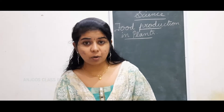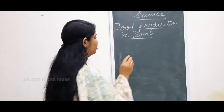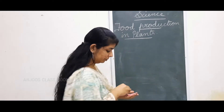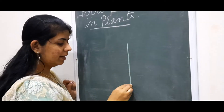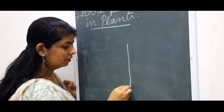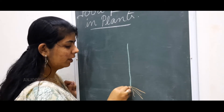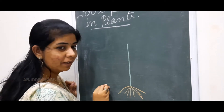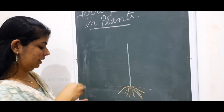So first let's draw a plant. Everybody knows how to draw a plant. First we will draw the plant. You can see this part under the soil, and that is the root.